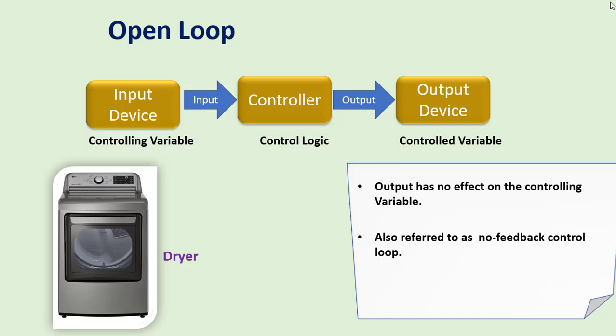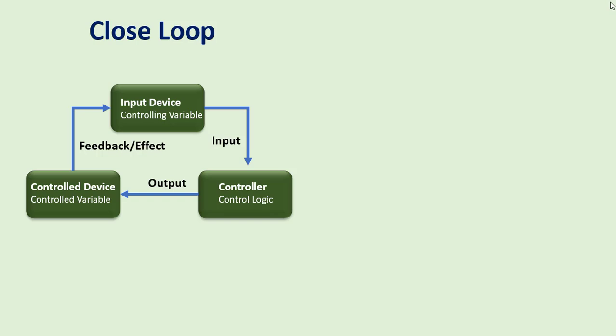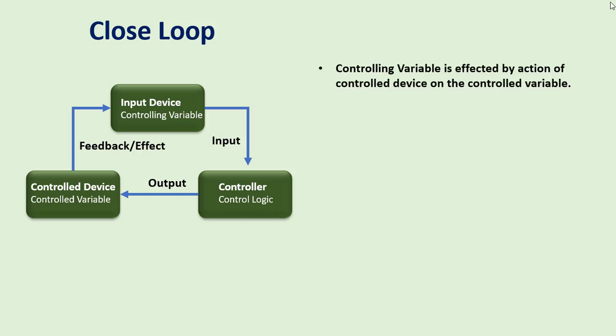The dryer is turned on and the controlling variable is the drying time set with the dial on the front. The output — the controlled variable — tells the dryer to keep rotating and heating the laundry. The dryness of the laundry has no effect on the timer setting. The dryer will continue running until the end of the preset time, even if the laundry is already dried.